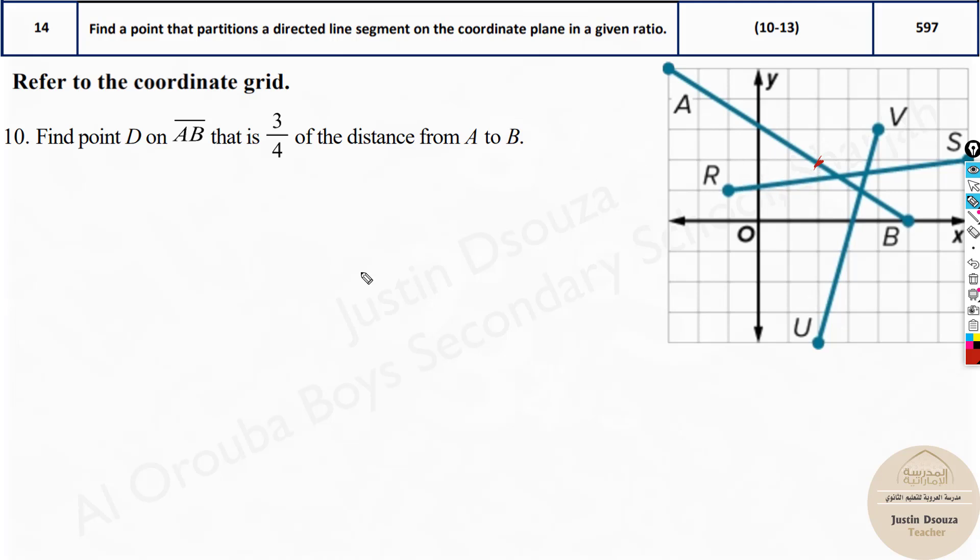We will have to use the formulas which we learned in the previous question, question number 13. But it's just that here there is X and Y. X1, Y1 is the initial point and the terminal point is B. So we write X2, Y2. This is the only difference. We have to use the formula two times.